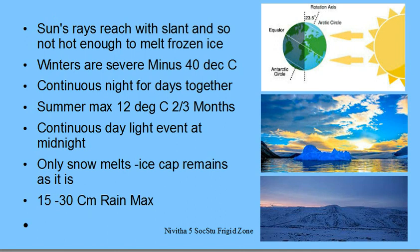Dark days mean the days are very short — one to two minutes will be the day and 23.5 hours will be the night in winter. During summer, the days are long — 23.5 hours will be the day and you will have only 10 to 14 minutes of night. That means the sun never sets. The summer of the northern hemisphere will have days of the midnight sun. That is why Alaska, Canada, and all are called land of the midnight sun.